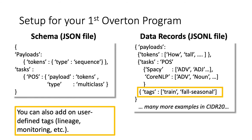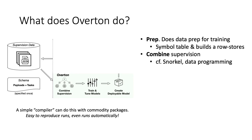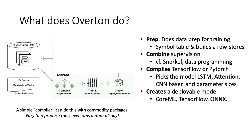Another important feature is the ability to tag examples, which lets us build a host of downstream monitoring tools nearly automatically. It also lets us synthesize a row store or Pandas dataframe for filtering queries. Given this input, Overton preps the data for training — building all tensors, symbol tables, and data structures needed for high-speed performance. We then combine supervision using ideas from Snorkel and data programming, which lets us deal with incomplete and overlapping supervision. We then compile the model to TensorFlow, PyTorch, or Core ML, doing a model search and hooking into production training code. Finally, we create a deployable model in whatever format needed.